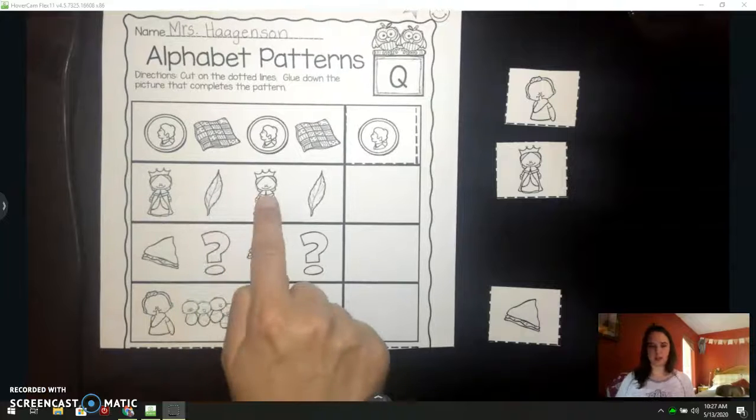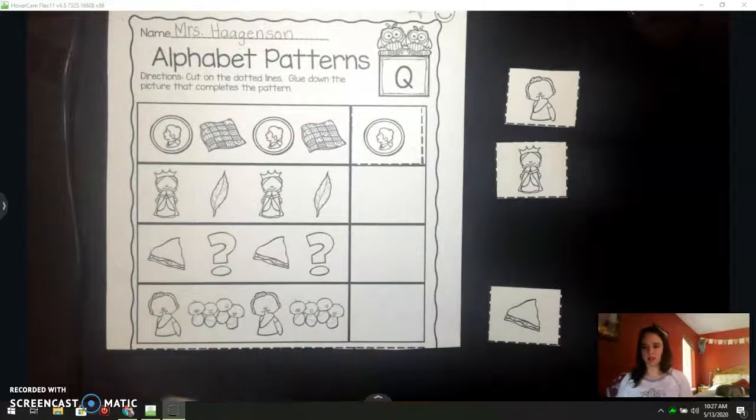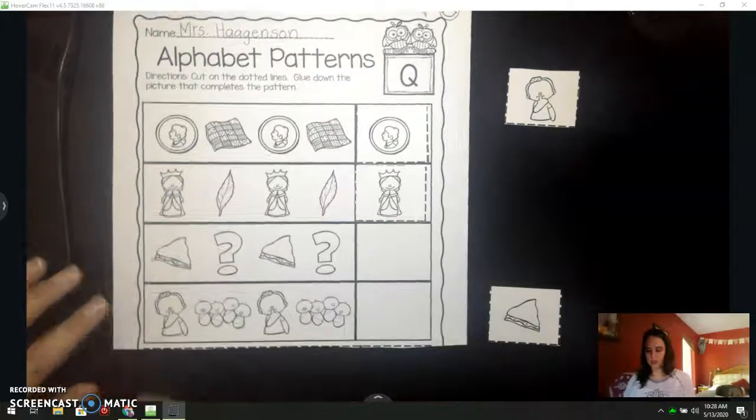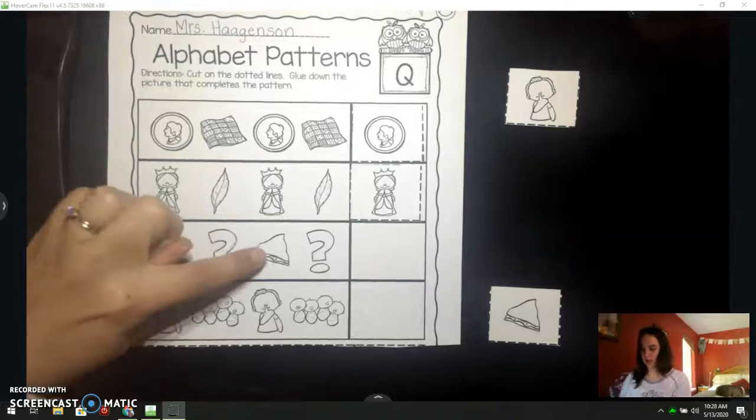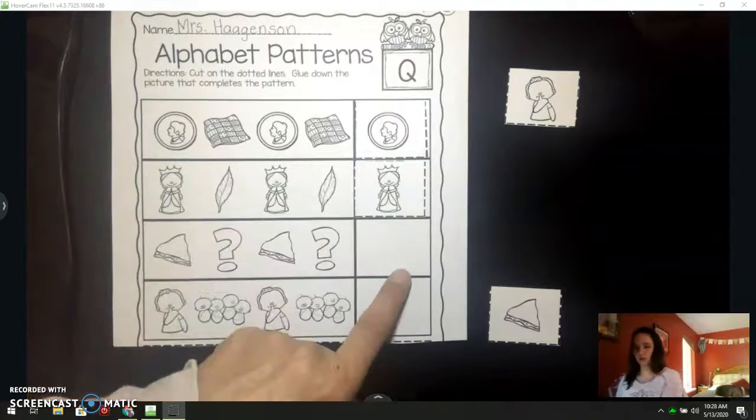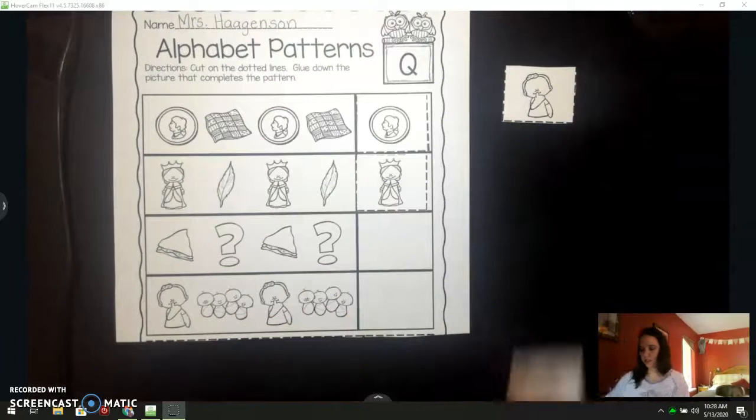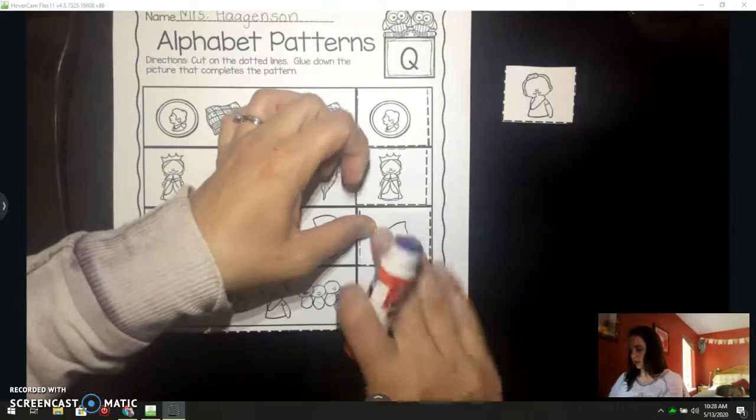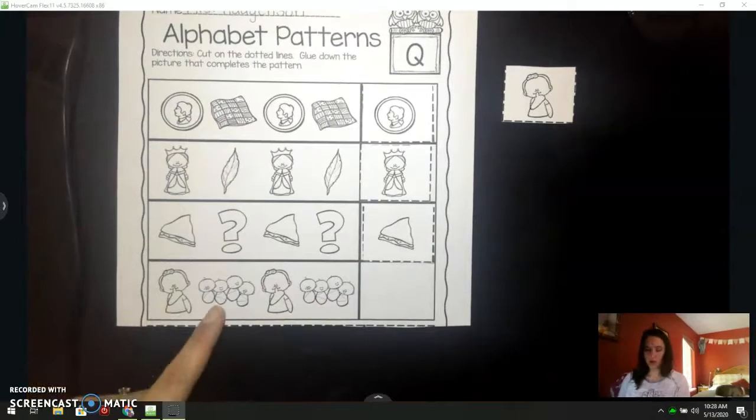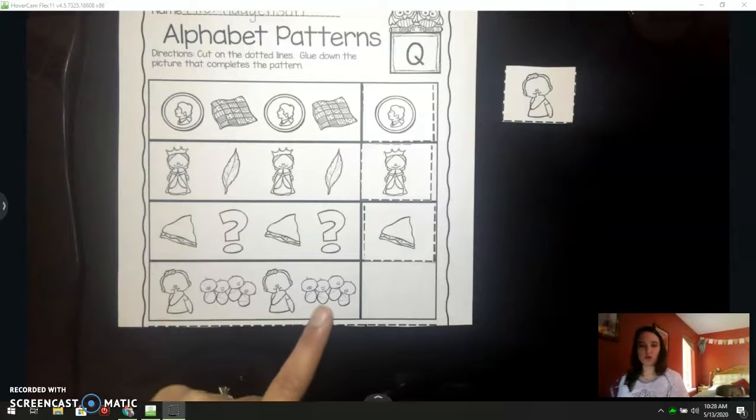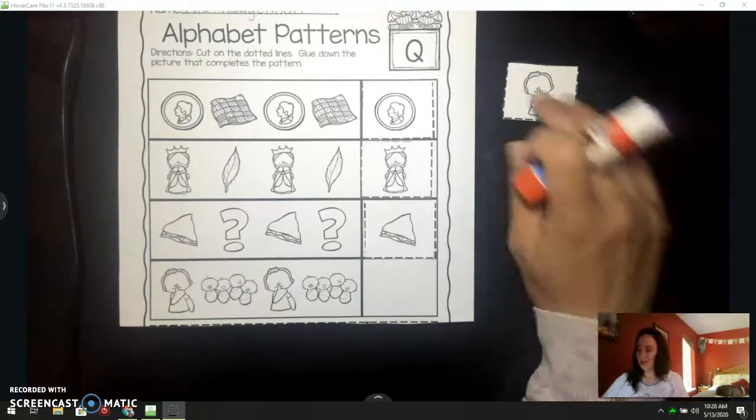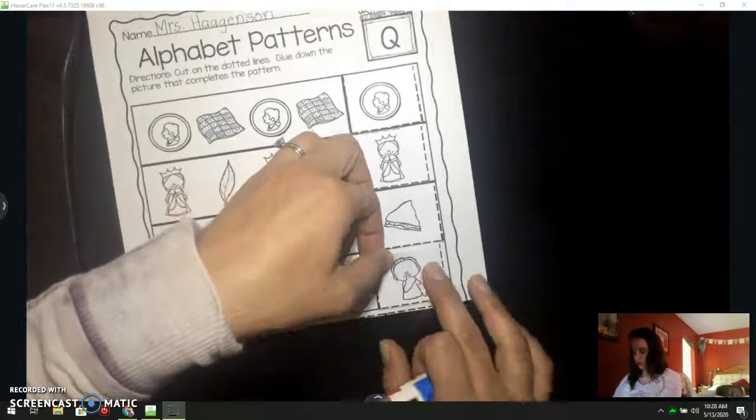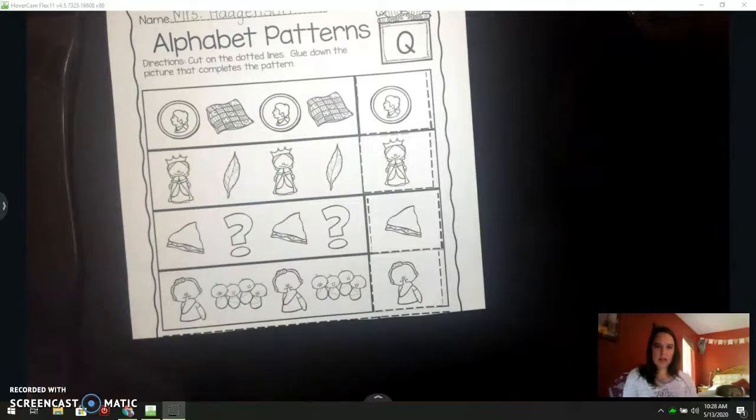Queen, quill, queen, quill. Yes, queen. Quiet, quadruplets, quiet, quadruplets, quiet, quadruplets. My last one, quiet. It would not be very quiet at your house if you had four babies. Quadruplets. There is my alphabet patterns page.